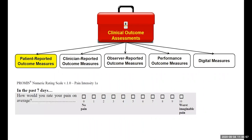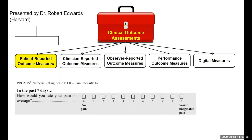The ideal, or what is considered the gold standard, is that each individual person or patient should be able to report on what their pain level and pain experiences are. Here we're looking at an example from the PROMIS system, which is their 11-point numeric rating scale, asking: in the past seven days, how would you rate your pain on average? A score of zero represents no pain and a score of 10 represents worst imaginable pain. Patient-reported outcomes are the ideal way to collect information about pain. If you want more details about patient-reported outcome measures, I encourage you to watch the video from Dr. Robert Edwards from Harvard.